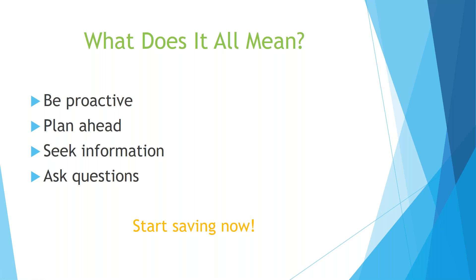So what does this all mean? We've talked about loan debt, wants and needs in terms of budget construction, and credit cards and how to develop a FICO score. Basically, we want you to be proactive, be smart, and plan ahead. Seek out information, don't make any rash decisions, and don't apply for a credit card without looking at options to make sure you're getting the best one with the lowest interest rate. Ask questions, and savings is a must — it's not a luxury — so we want you to start saving now.